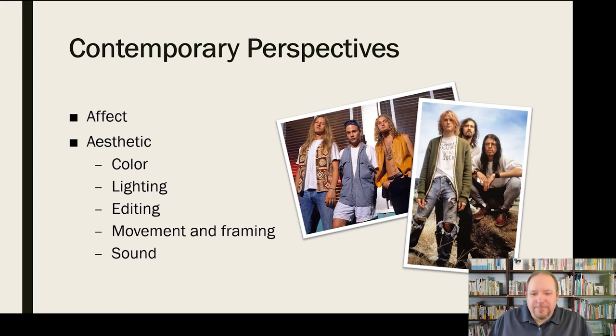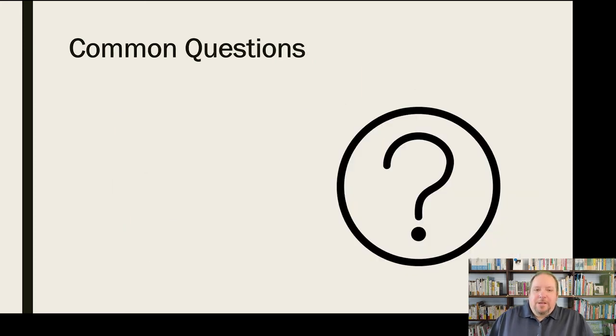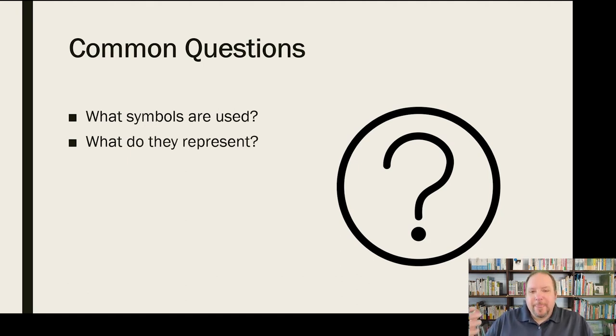So some common questions. These are, I mean, there are a lot of questions we could get into for rhetorical analysis. There are, I mean, all kinds of stuff here. So I just picked a few of the broader, more common questions that we look at maybe in rhetorical analysis, things like, first of all, what symbols are used? What symbols are utilized in this artifact? What are the symbols themselves? And once we identify, you know, what the different symbols are, what do they represent? What do we think they're supposed to, what message are they trying to convey here? What do these symbols represent?